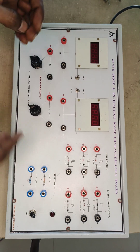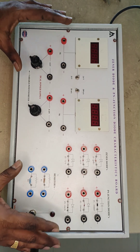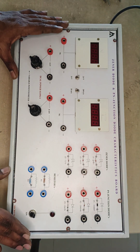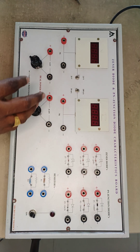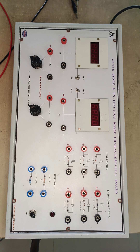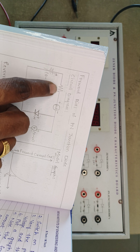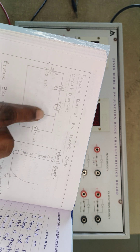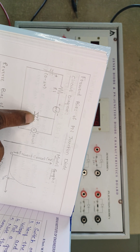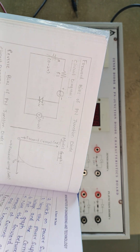Now let me explain how to give the connections to study voltage and current characteristics of the PN junction diode. See the circuit diagram — this is the 2 volt battery, this is the resistor, an ammeter (milliammeter), the PN junction diode, and a voltmeter. Based on this circuit diagram, here we have to give the connections.